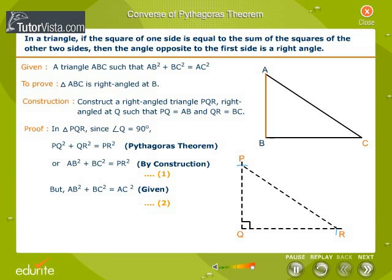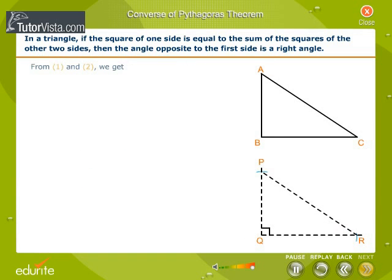But it is given that AB² + BC² = AC². From equations 1 and 2, we get PR² = AC². That is, PR = AC.